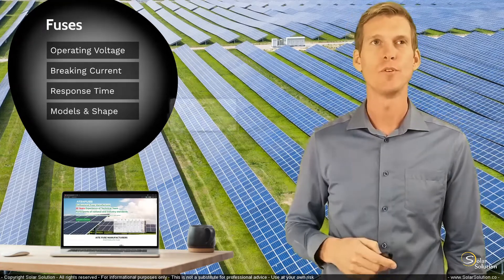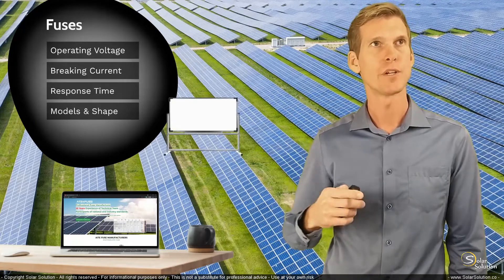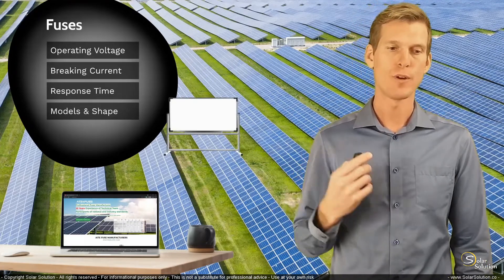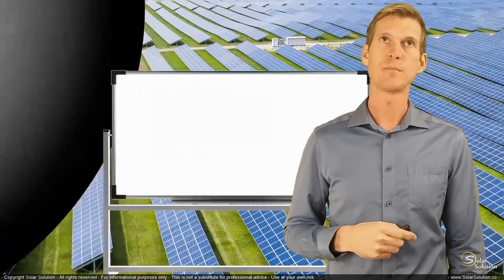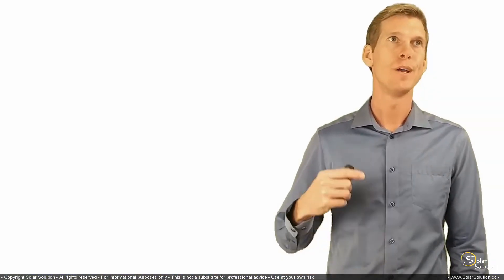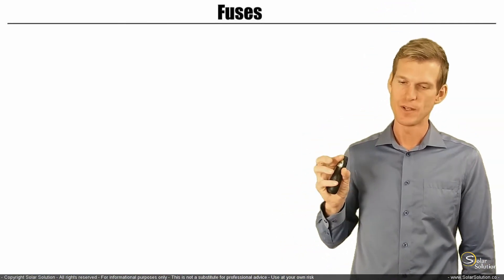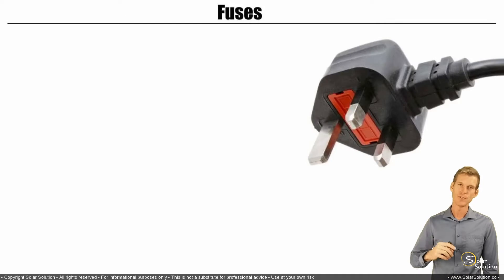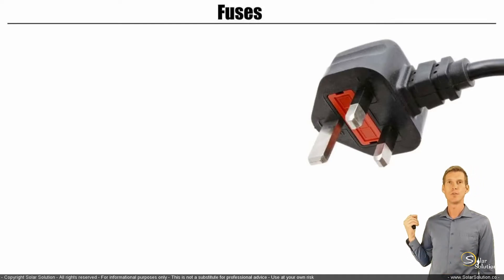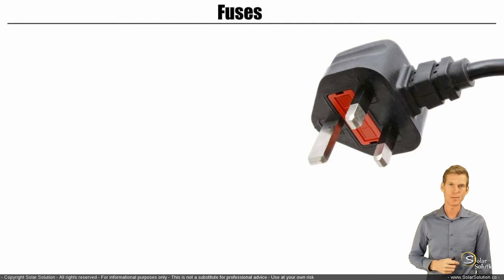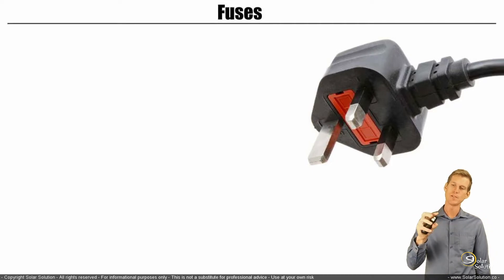Let's go to the whiteboard and look at a practical example of how a fuse can be incorporated in a system. We'll focus on a simple plug — the kind you press into your wall outlet. This is a typical British UK plug, and it has a fuse already built into it.